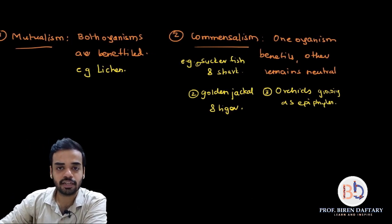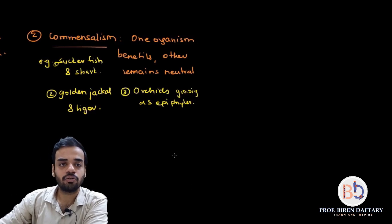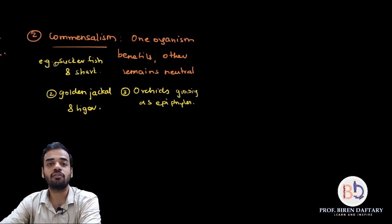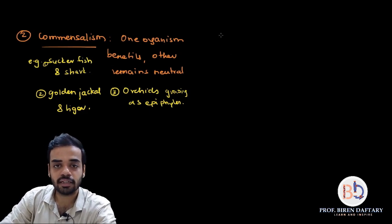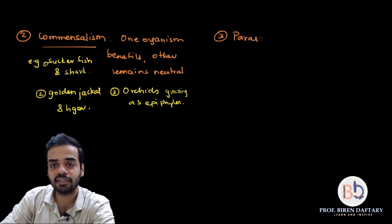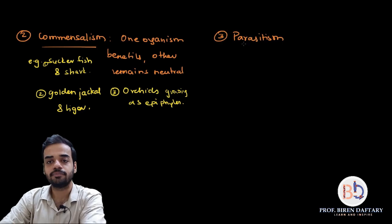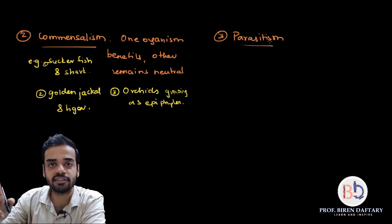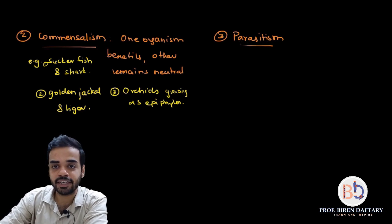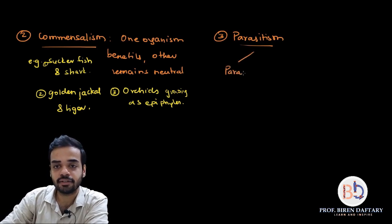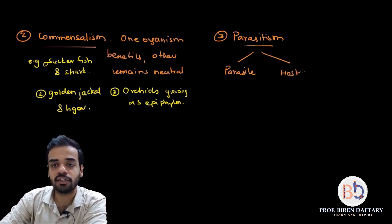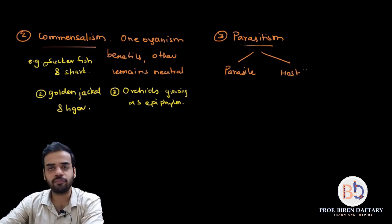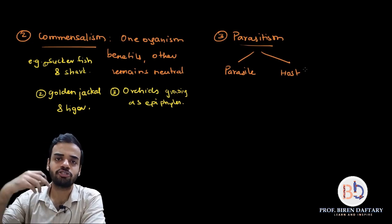Now we come to the third category, where one organism is benefited and the other is harmed. The first type under this category is parasitism. In parasitism there are two organisms: the organism which gets benefited is called the parasite, and the organism which is harmed is called the host.